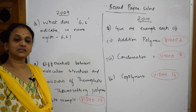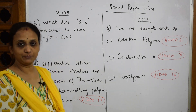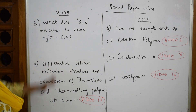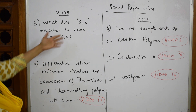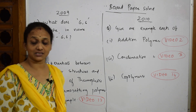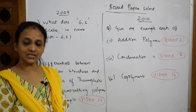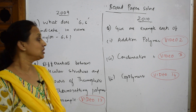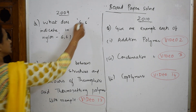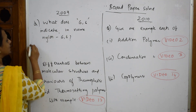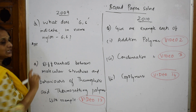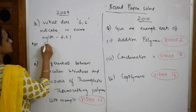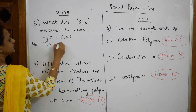Let's come back and complete your 2009-2010 paper. In the 2009 paper they've given one interesting question: what does six six indicate in the name nylon six six? We've already done this — nylon six six is a combination of hexamethylene diamine and adipic acid. When such a question is given, they are asking what is the six six, and you have to write your answer in that term. Basically, it is the number of carbon atoms.